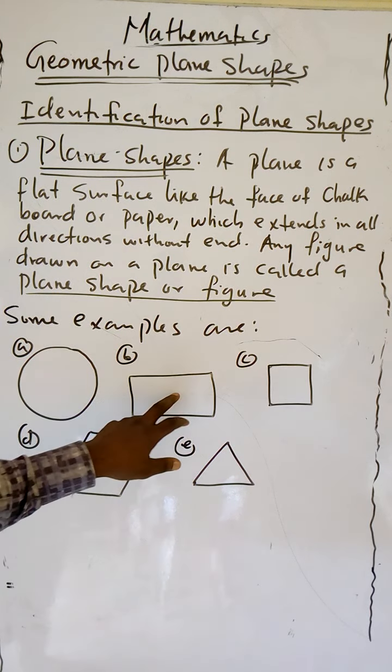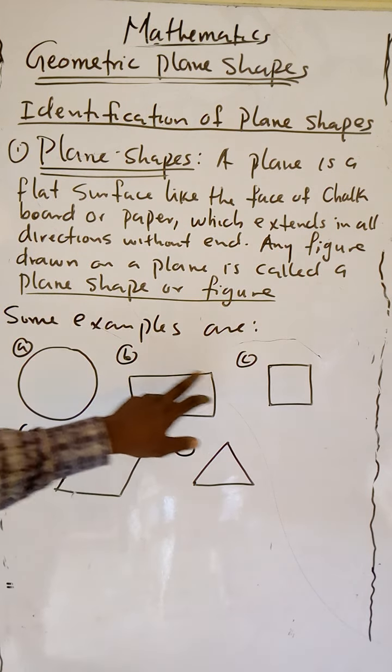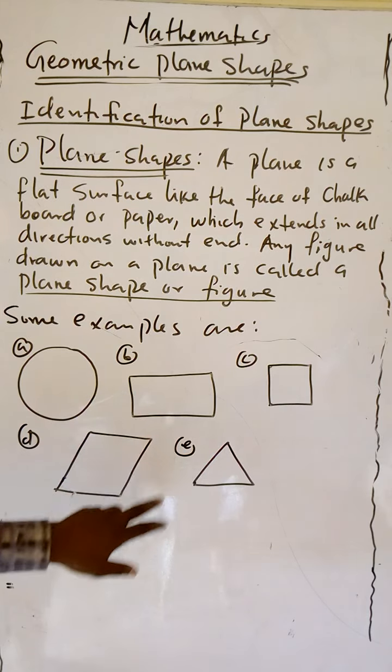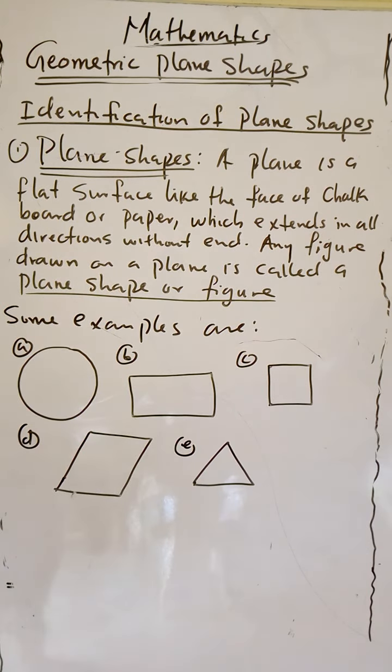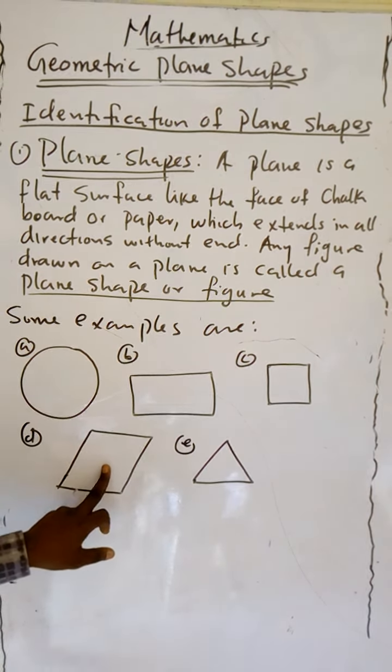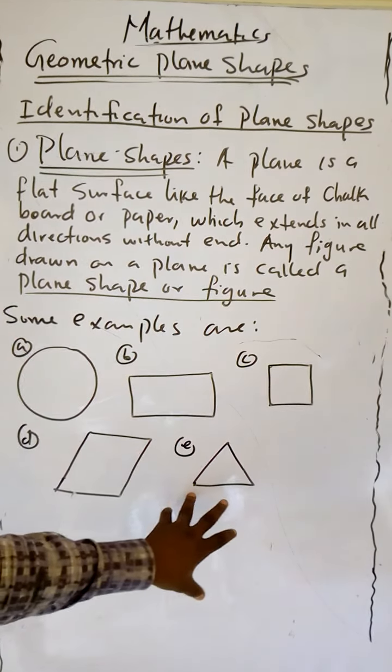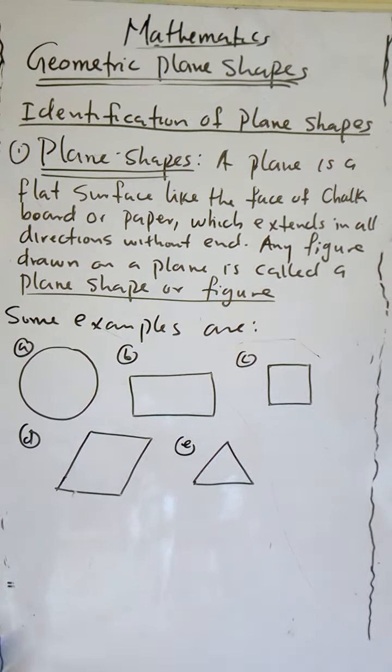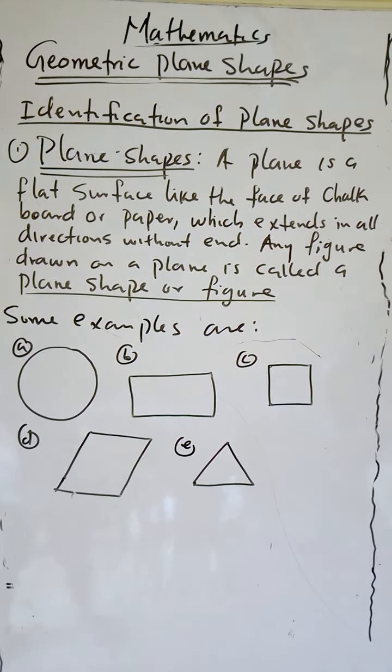This one is rectangle. This is rectangle. We have square. We have parallelogram. We have another shape here. These are types of shapes. We call it shape.